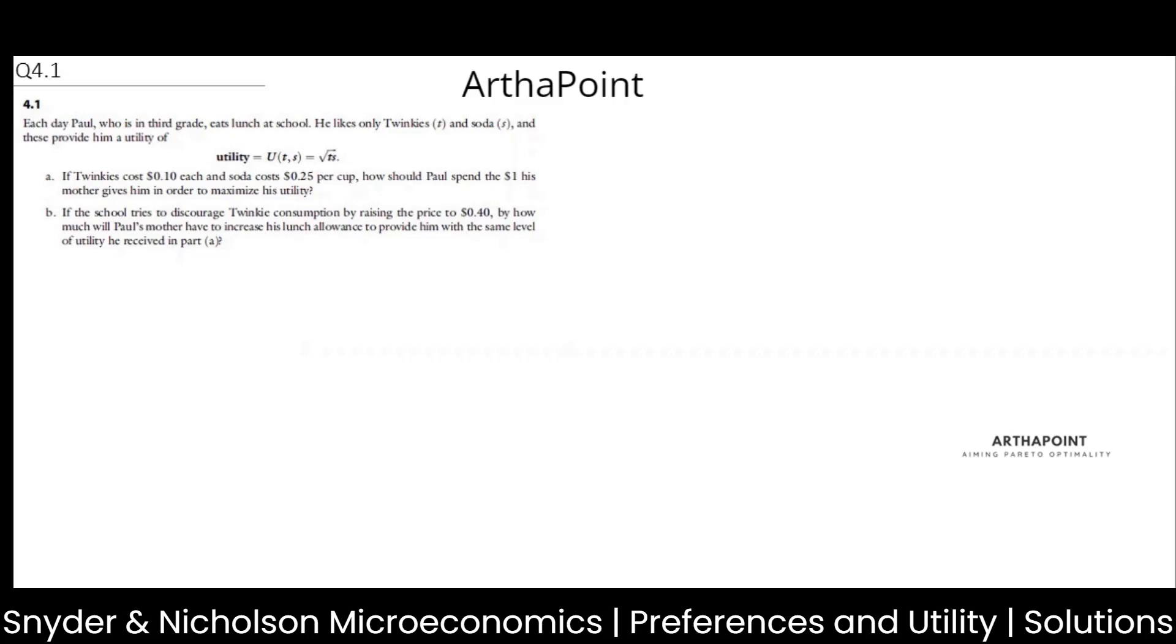Let's have a look at the utility function, given as root TS. If Twinkies cost PT is given as $0.10 and soda cost PS is given as $0.25, how should Paul spend his $1 given by his mother to maximize his utility?